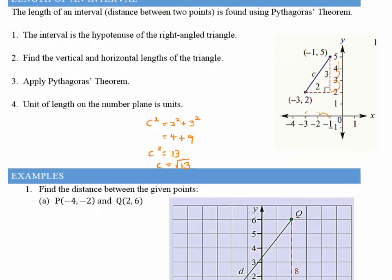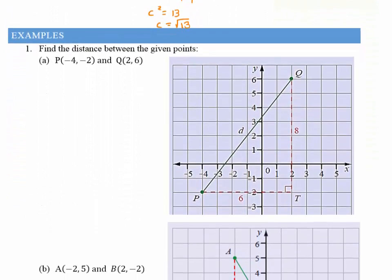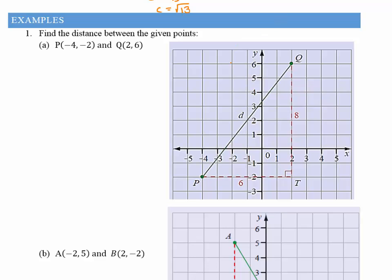So let's have a look at a couple of examples just using my graph and this idea of using Pythagoras's theorem. If I have a look at this first example, I've got P(-4, -2) and Q(2, 6), which is shown down here. I've got my other point Q.